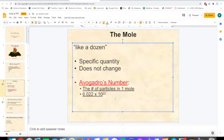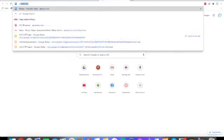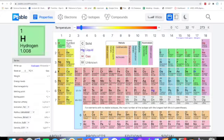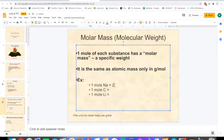Molar mass, also known as molecular weight. One mole of each substance has a molar mass or specific weight. It's the same as the atomic mass, only the unit you use is grams per mole. For example, if you have one mole of Na, you can open ptable.com, find Na - whatever the mass number or bigger number is, that's your molar mass. So the molar mass for Na would be 22.99, so one mole is 22.99 grams per mole.